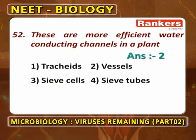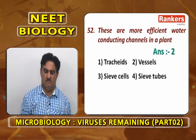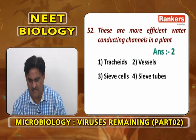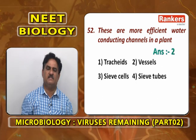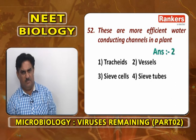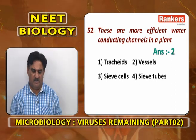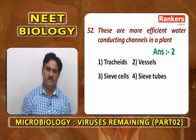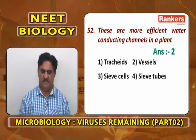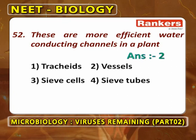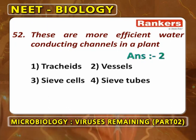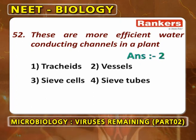More efficient water conducting channels in plants: tracheids, vessels, sieve cells, or sieve tubes — answer is vessels. Previously scientists thought tracheids, because of bordered pits, were more stable for conduction of water in pteridophytes and gymnosperms. But tracheids are slowly replaced by vessels. A disadvantage of tracheids is that the end walls are closed; in vessels, end walls are open and they form a continuous channel from root tip to stem apex. Second option.